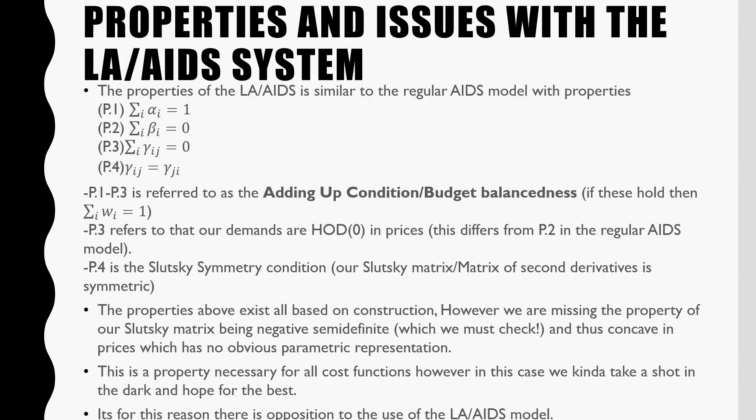The properties of the Linear Approximate Almost Ideal Demand System are similar to the regular AIDS model with properties 1 to 4, where P1 to P3 are referred to as the adding up or budget balances condition. P3 refers to the fact that our demands are homogeneous to degree 0 in prices. This differs from P2 in our regular Almost Ideal Demand System model, so check that out in my other video. P4 is the Slutsky Symmetry Condition, which basically means that our substitution terms are going to be equivalent to each other.